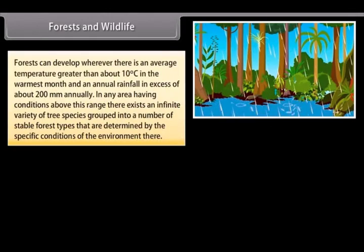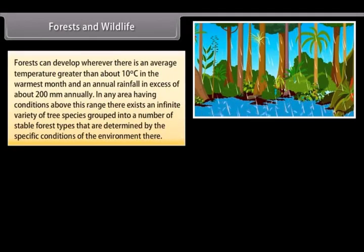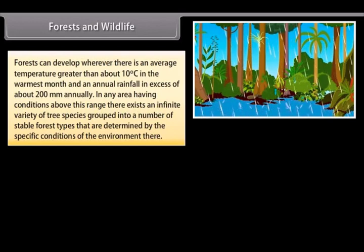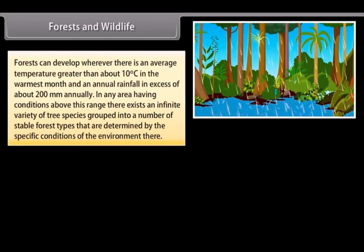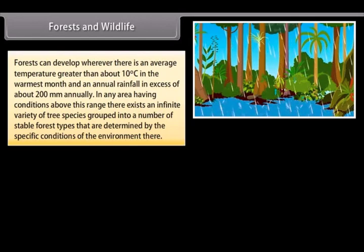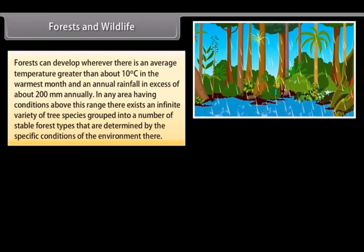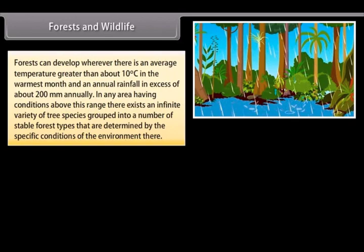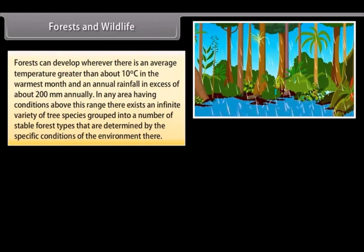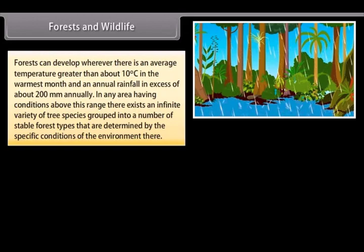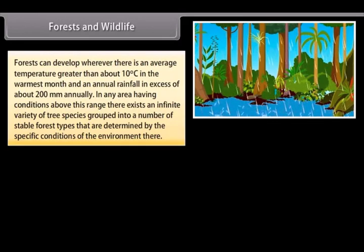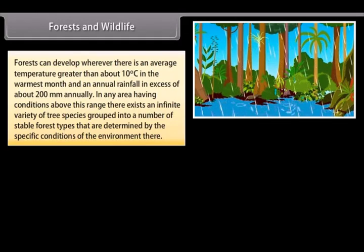Forests can develop wherever there is an average temperature greater than about 10 degrees Celsius in the warmest month and an annual rainfall in excess of about 200 mm annually. In any area having conditions above this range, there exists an infinite variety of tree species grouped into a number of stable forest types that are determined by the specific conditions of the environment.